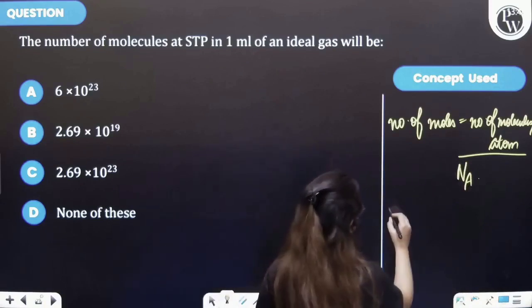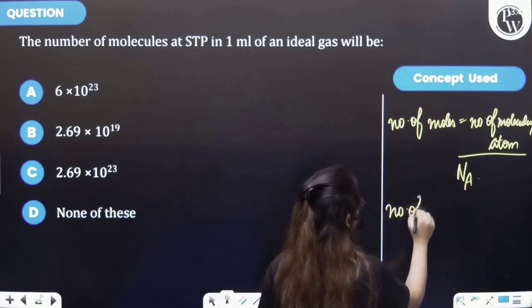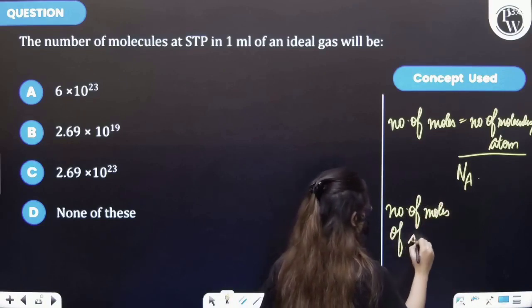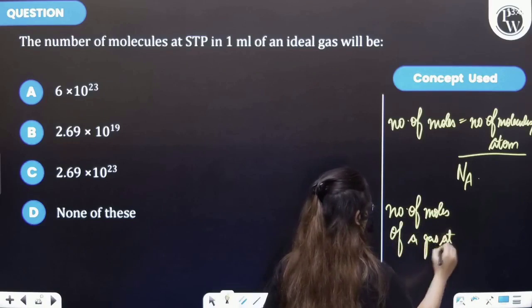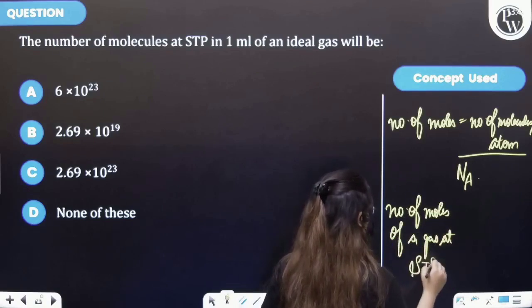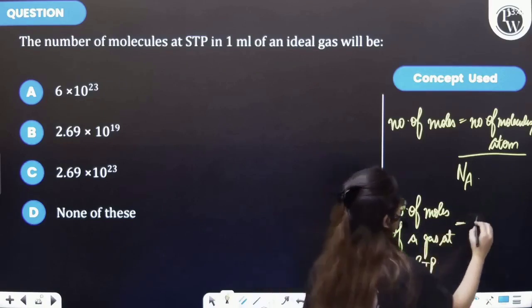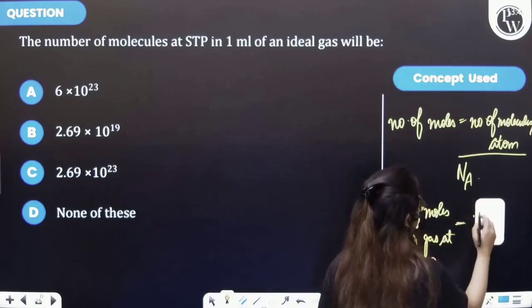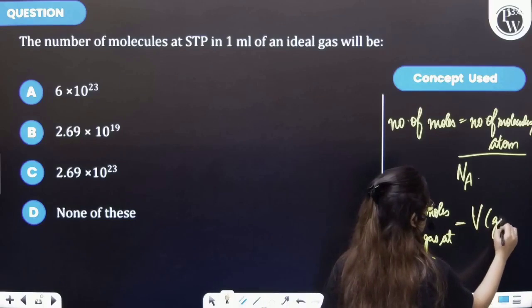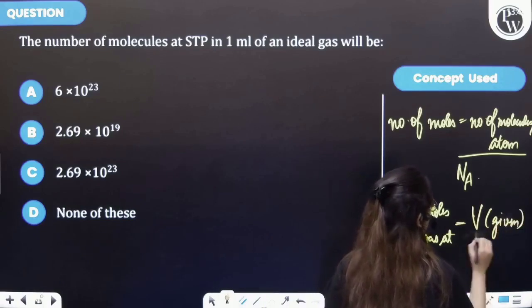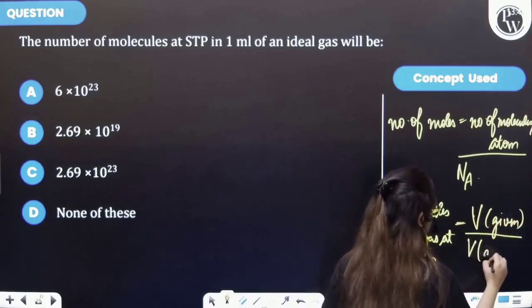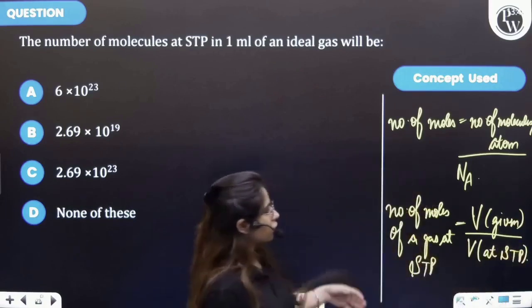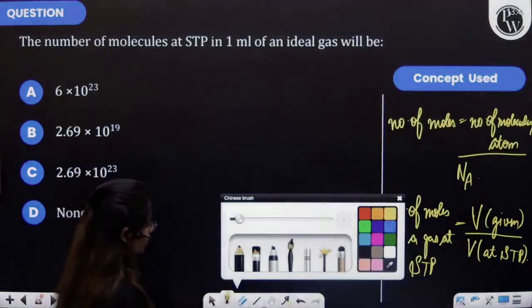Also we know that if we talk about number of moles of a gas at STP, then it is equal to volume that is given to you divided by volume at STP. So using these two formulas let's do our question.